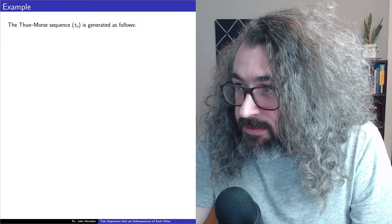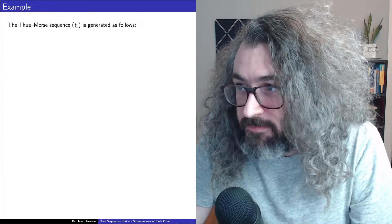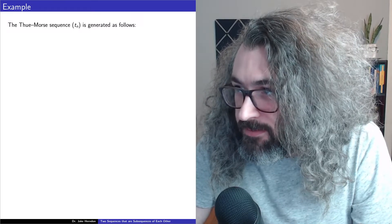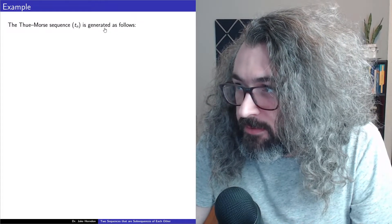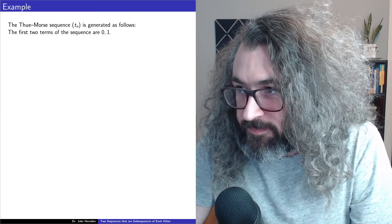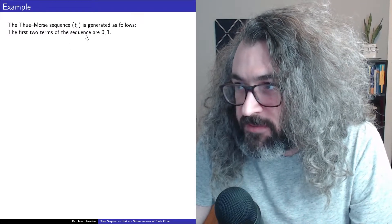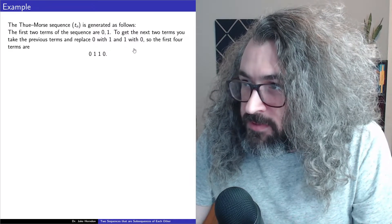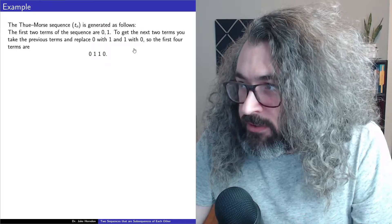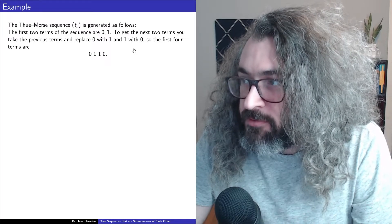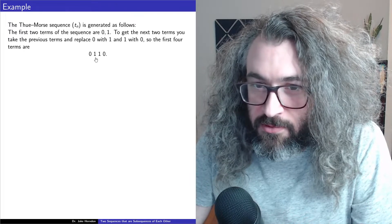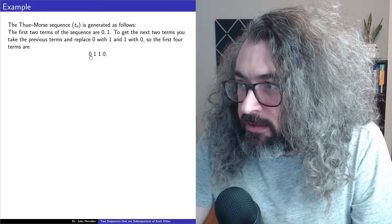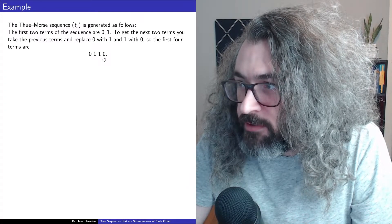There is a sequence called the Thue-Morse sequence. Thue is pronounced 'too' and spelled T-H-U-E. It's denoted T_n and generated as follows. The first two terms of the sequence are 0 and 1. To get the next two terms, you take the previous terms and replace 0 with 1 and 1 with 0. So the first four terms are 0, 1 — those are the two terms from before — and then you take the previous two terms and flip them, so instead of 0, 1 you write 1, 0.